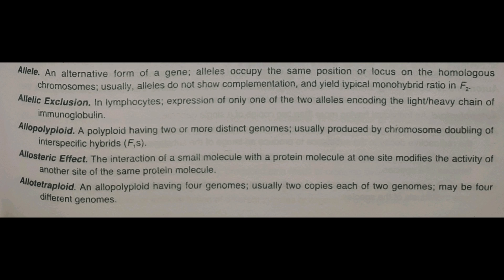Starting with the first one - allele. Allele kya hota hai? Gene ki alternating form hoti hai. Gene mein do tarah ke alleles hote hain. Alleles occupy the same position or locus on the homologous chromosome.